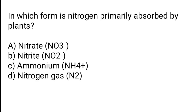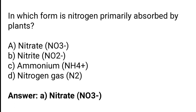The options for what plants primarily absorb from the soil are: nitrate (NO3−), nitrite (NO2−), ammonium (NH4+), or nitrogen gas (N2). The correct answer is option A — nitrate (NO3−) is primarily absorbed by plants.